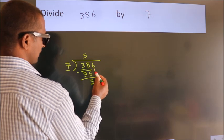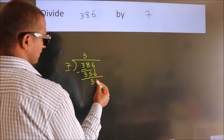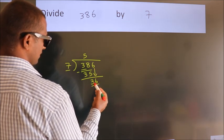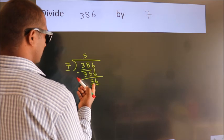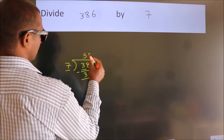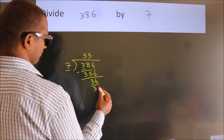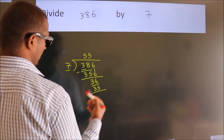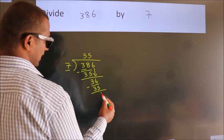After this, bring down the next number. So, 6 down. So, 36. A number close to 36 in the 7 table is 7 fives, 35. Now we subtract and get 1.